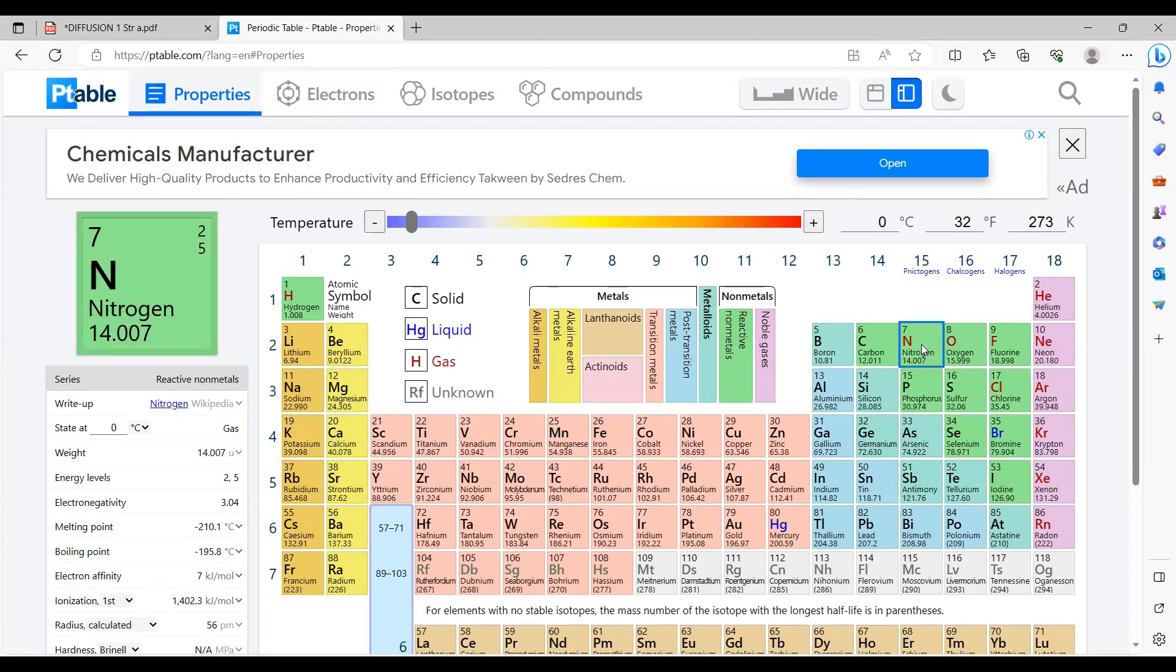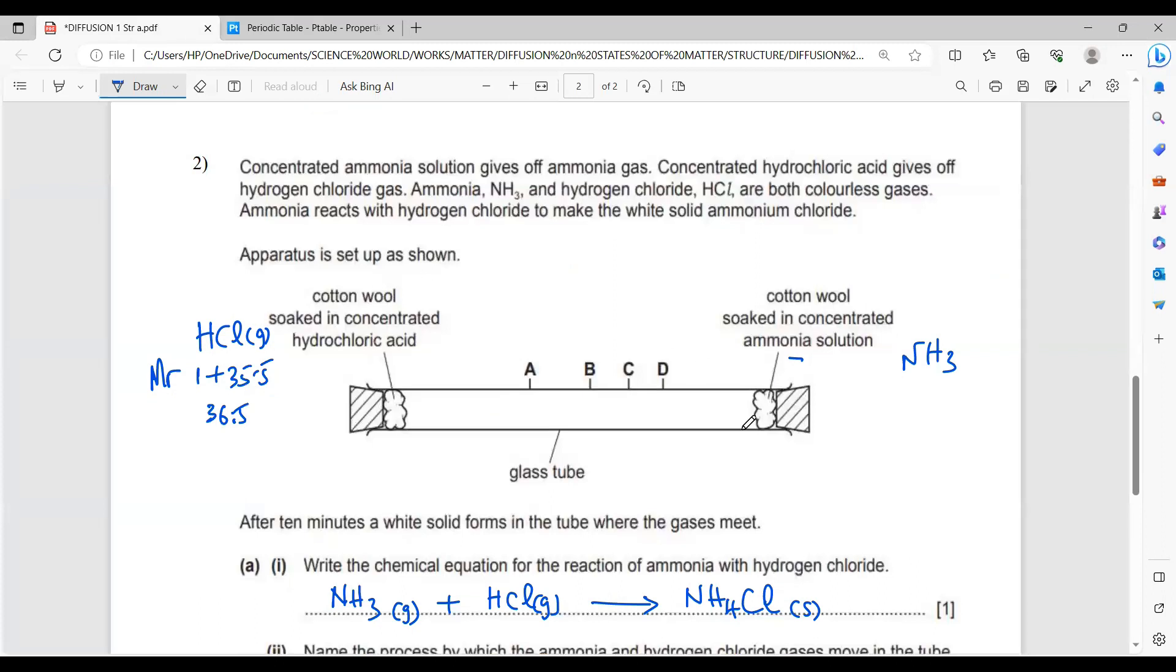You can check your periodic table. Hydrogen is one and your chlorine is 35.5. So 1 plus 35.5 gives you 36.5. Now for ammonia, nitrogen is 14. So we put 14 plus hydrogen, which is 1 times 3, and that gives you 14 plus 3 is 17.